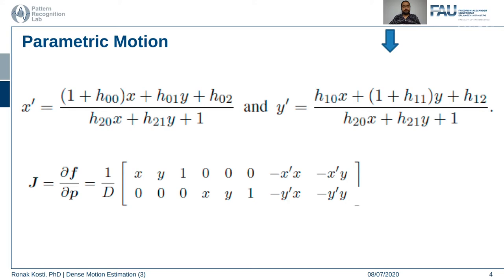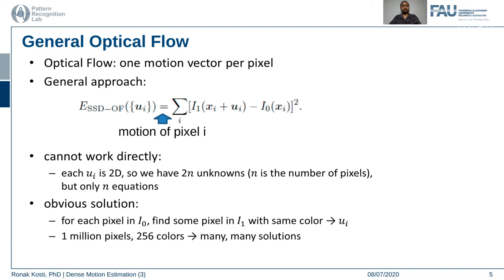Today we continue talking about how we can estimate optical flow and the different methods that can be used. After estimating optical flow we can find the generic motion estimation between frames in a video or between two images. The most general form of optical flow can be represented by an equation where ui represents each and every pixel in the given image i0, and using this error metric you can find the optical flow for each and every pixel.